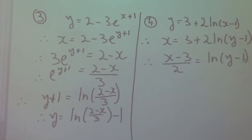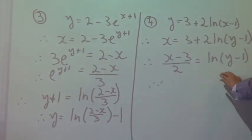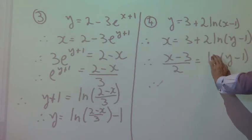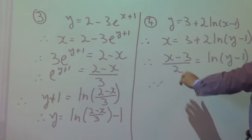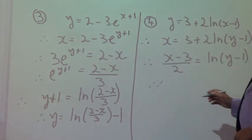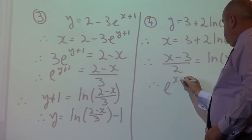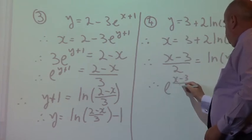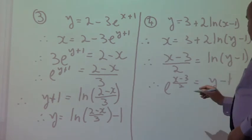So, what do we do now? We can exponentiate both sides, which means simply that that's going to go out. And I write e to the power of x minus 3 on 2. Therefore, e to the power of x minus 3 on 2 equals y minus 1.